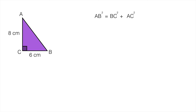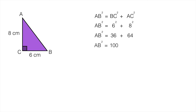Now I need to substitute in some values. BC is 6 and AC is 8, so stick those in. 6 squared is 36 and 8 squared is 64, so I end up with AB squared equal to 36 plus 64, which is 100.